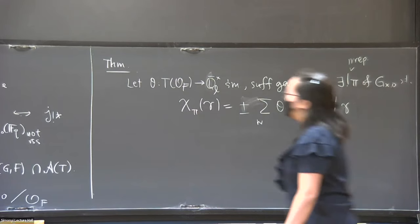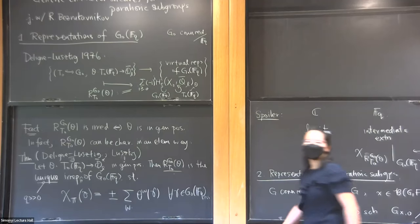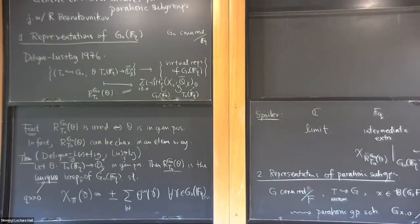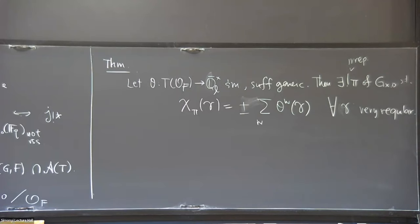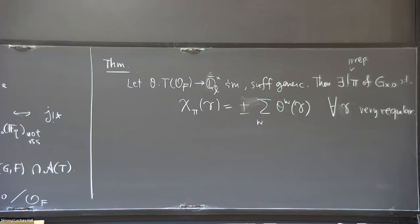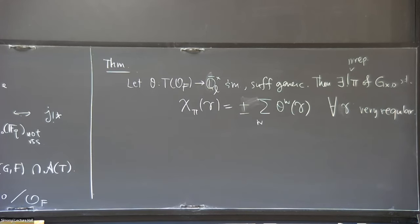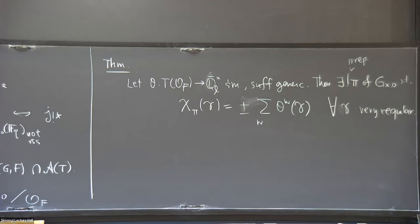The replacement of 'regular semisimple' in this context is a notion called 'very regular.' This terminology originated in French — I've translated it into English — and I believe it dates back to Gérardin, and was also used by Henniart in a lot of GL_N works. A very regular element inside the parahoric is a regular semisimple element inside my p-adic group with some extra condition: when you reduce mod p, it looks regular semisimple in the reductive quotient, i.e., in the connected group over the finite field. The Weyl group W here is the one for that reductive quotient.